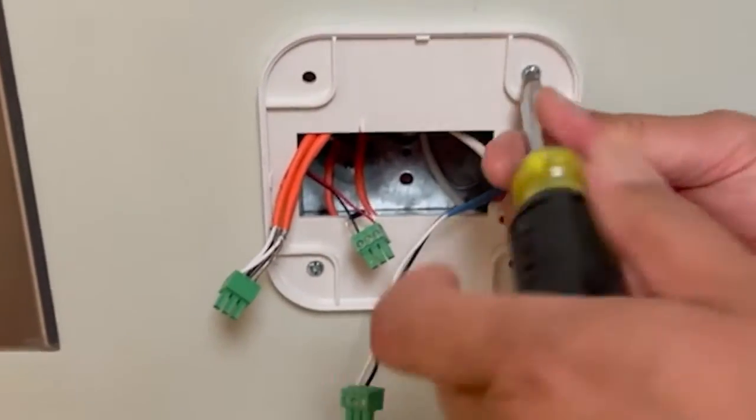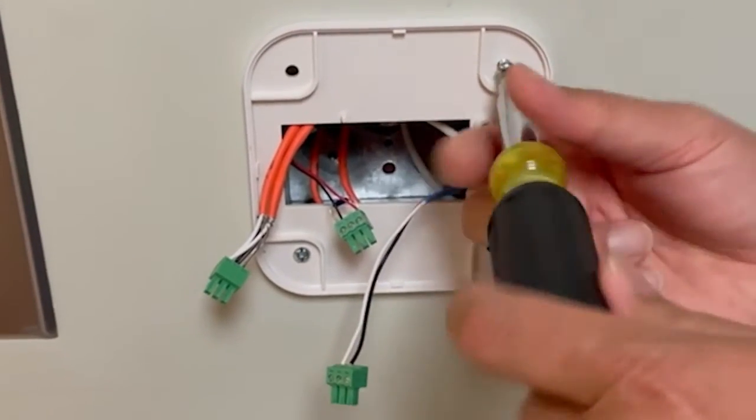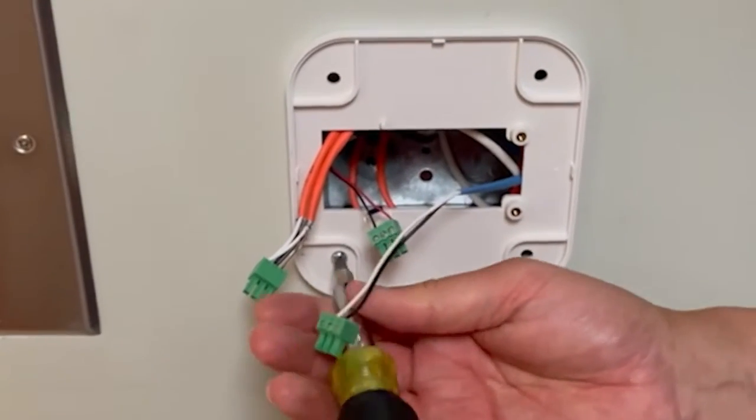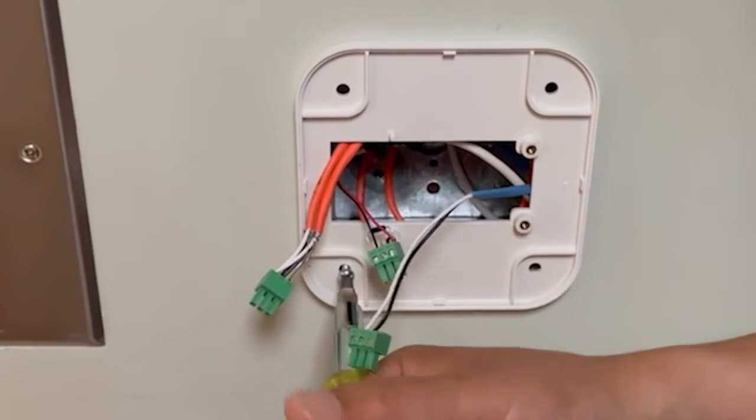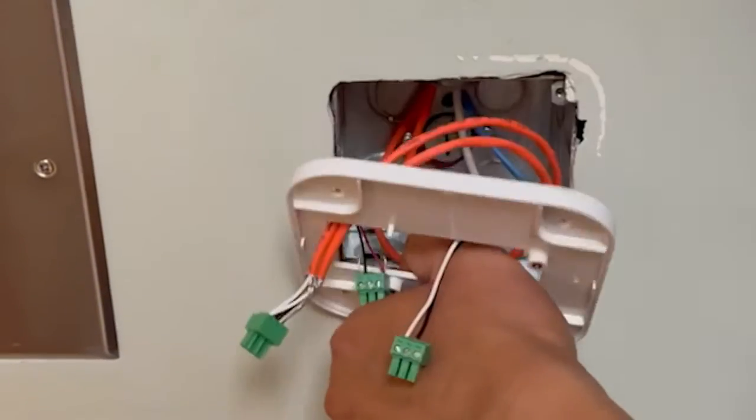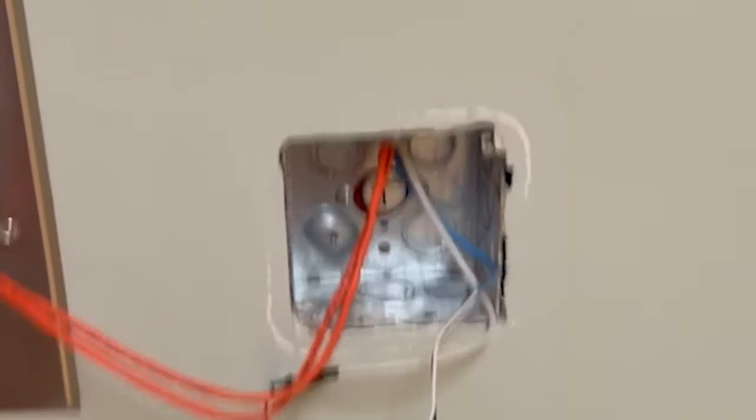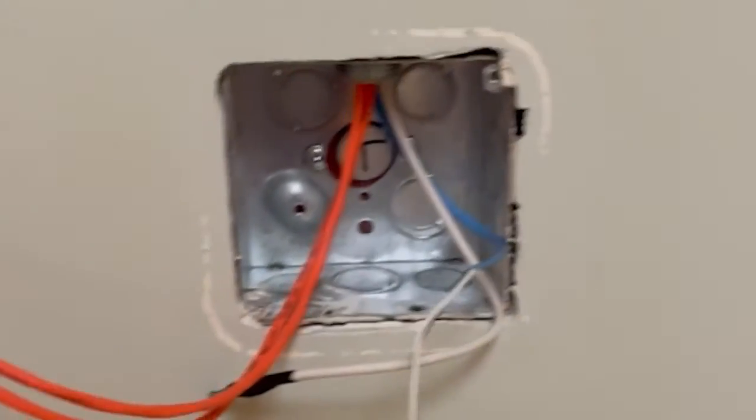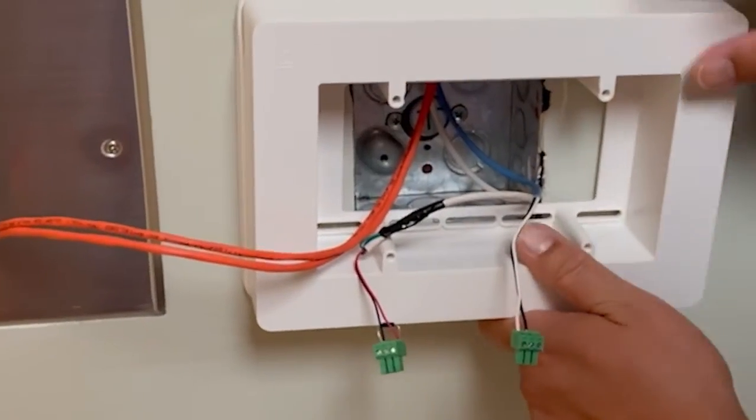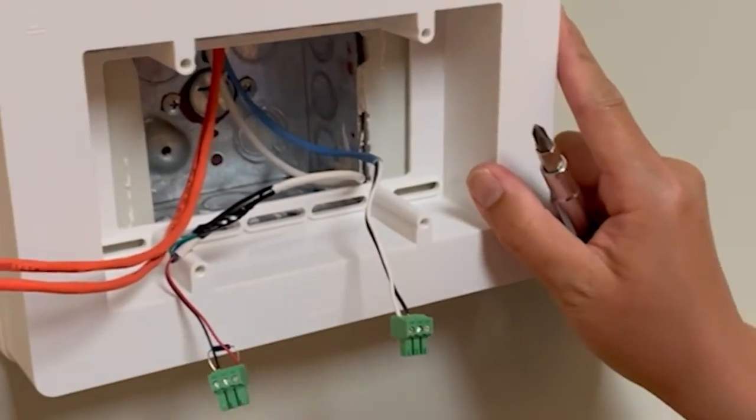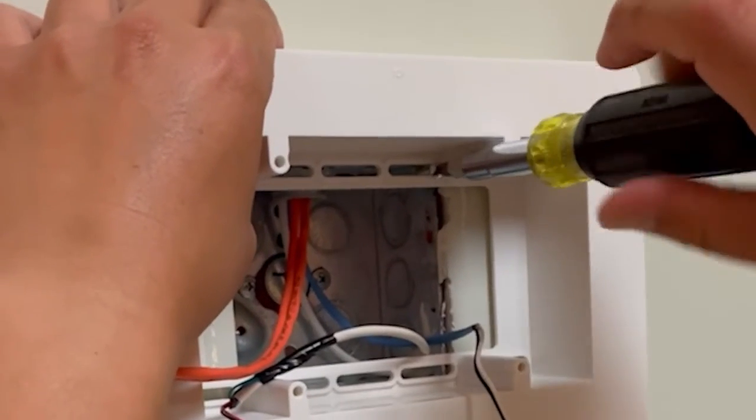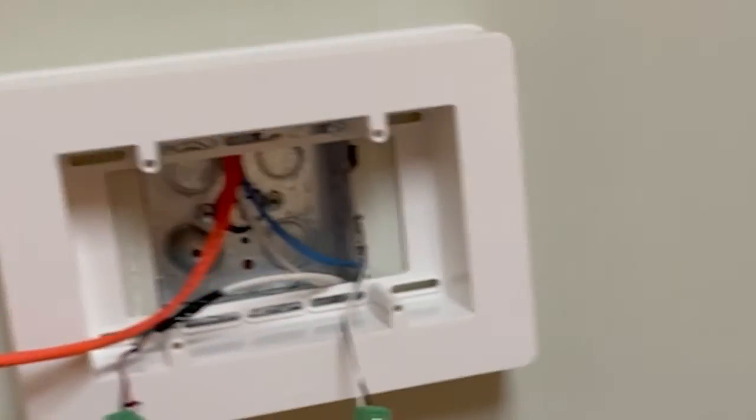To install our monitor, we're going to need to take off the original back plate using a standard Phillips screwdriver. The standard two gang or four by four box in the wall is not large enough to fit our monitor, so we're going to install this extension ring. Pass all your cables through. The extension ring attaches directly to the original two gang box. One screw in the top, one screw in the bottom.